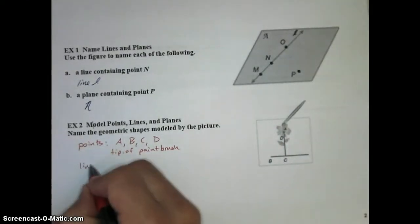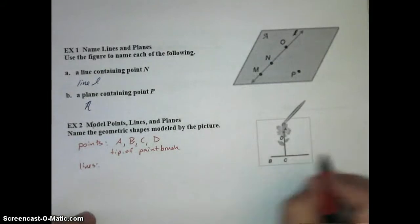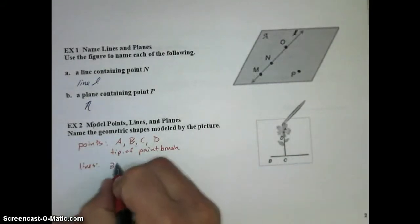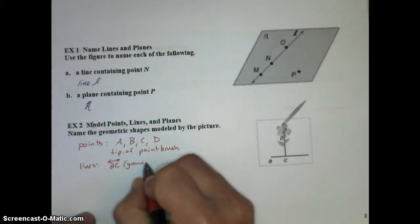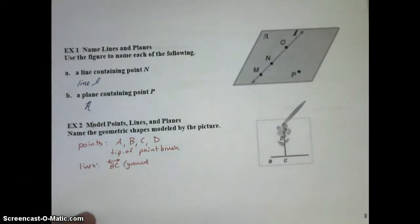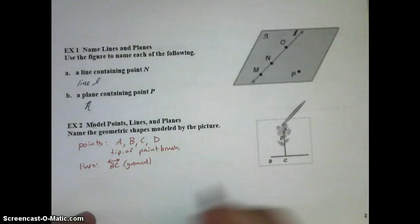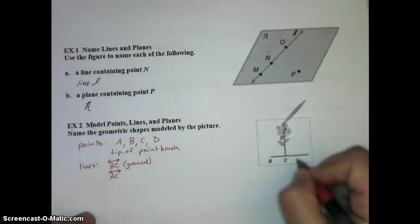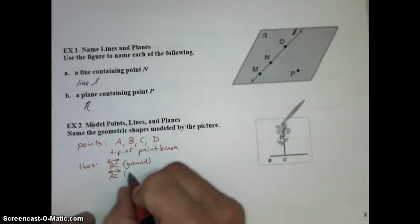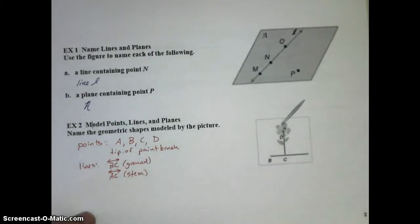Let's talk about lines. We have the ground, line B, C, which is the ground the flower is growing out of, or the earth where the flower pot is maybe. We have line A, C, even though it doesn't extend forever, it could. Line A, C represented by the stem of the flower. Those are some lines we have.